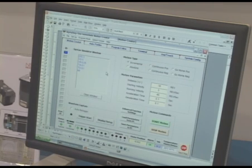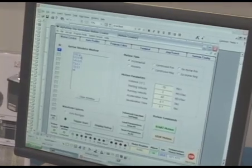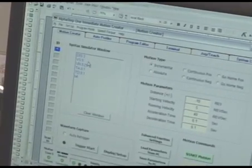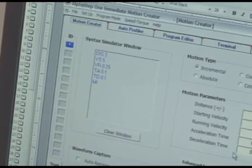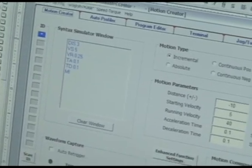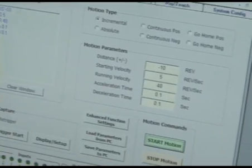Now with the ASX, we have the controller built in. We also offer a graphical user interface known as a GUI. This allows you to get the motor set up very quickly. You see by the pointer, we can simply program our distance, our starting velocity, and running velocity. With these quick parameters, we can actually start the motor and have it run.